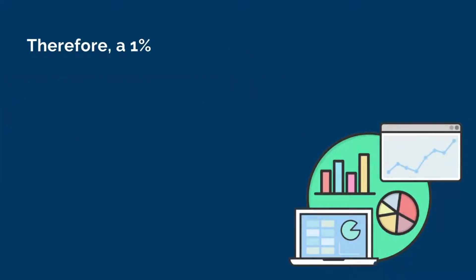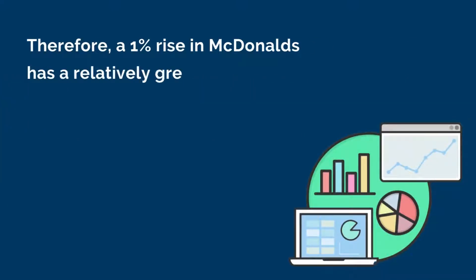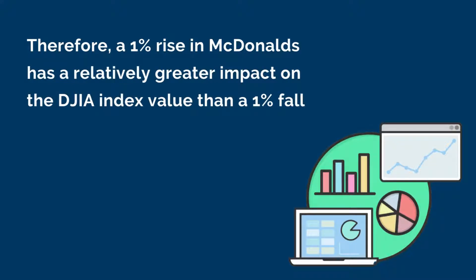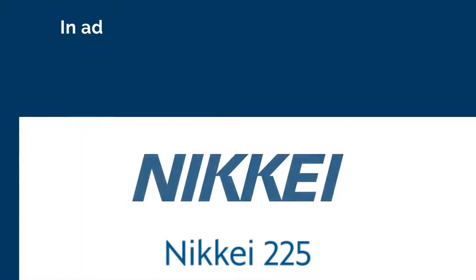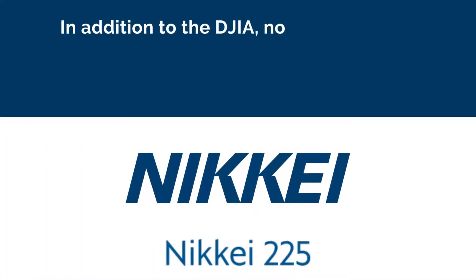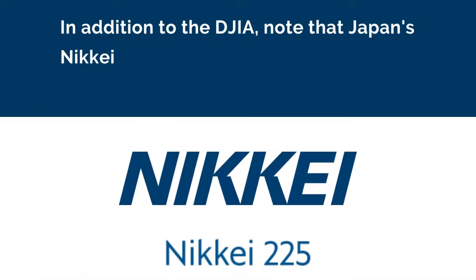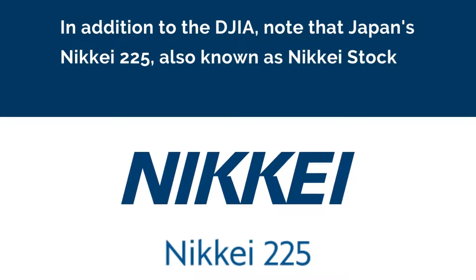Therefore, a one percent rise in McDonald's has a relatively greater impact on the Dow Jones Industrial Average index value than a one percent fall in Apple. As a result, the index will close in the green and positive. In addition to the Dow Jones Industrial Average, note that Japan's Nikkei 225, also known as the Nikkei Stock Average, is also a price-weighted index.